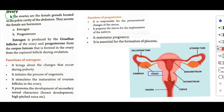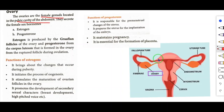Ovaries are the reproductive glands in females. The ovaries are the female gonads located in the pelvic cavity of the abdomen. In the diagram, two ovaries are present, along with the fallopian tube, uterine tube, endometrium, myometrium, cervix, vagina and fimbria.